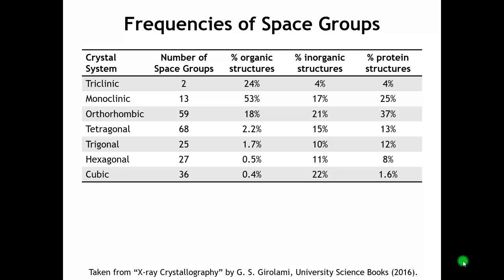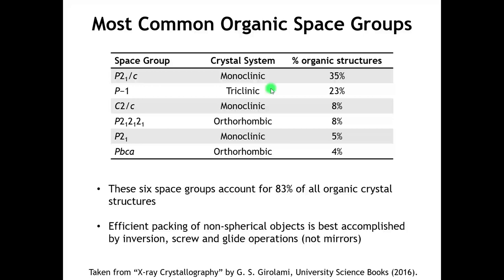As we saw last time, when we look at the frequencies of different space groups sorted by crystal system, we get a very different picture for organic substances than for inorganic substances. Most organic compounds crystallize in lower-symmetry orthorhombic, monoclinic, and triclinic crystal structures. Looking more closely at the most common space groups for organic compounds, there's even less variety: a whopping 58% — over half of all organic crystal structures — go into one of two space groups: monoclinic P2₁/C or triclinic P1-bar. Including the next four most common, 83% of all organic crystal structures belong to one of just six space groups.